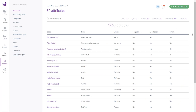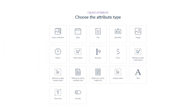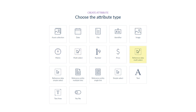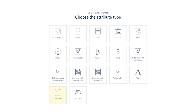Now choose the attribute type. There are 17 available, like asset collection, date, file, identifier, image, metric, multi-select, number, price, reference data multi-select, reference data simple select, reference entity multiple links, reference entity single link, simple select, text, text area, and yes/no attribute.